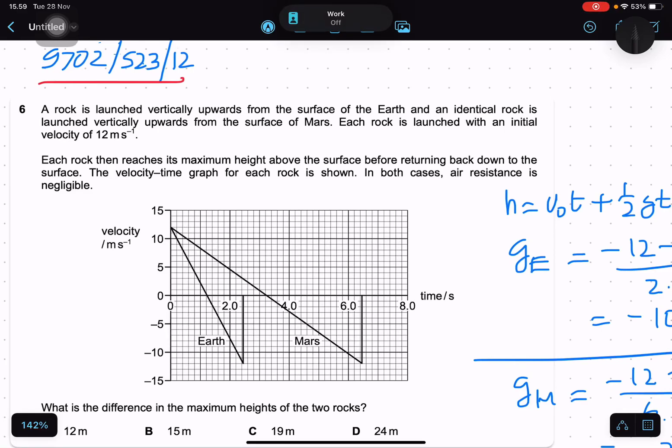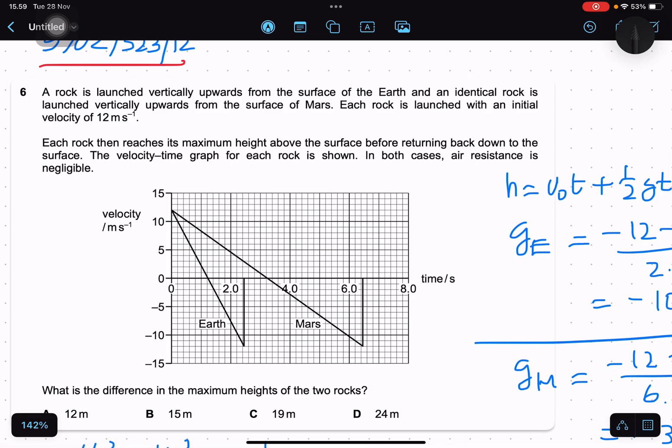Hi everyone, I have one question in 9702 summer 23 paper 12. This question is: A rock is launched vertically upward from the surface of the Earth and an identical rock is launched vertically upward from the surface of Mars. Each rock is launched with an initial velocity of 12 meters per second.